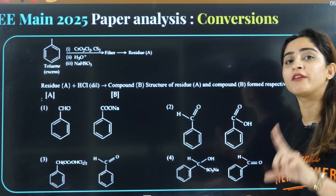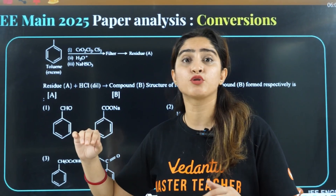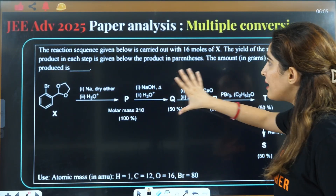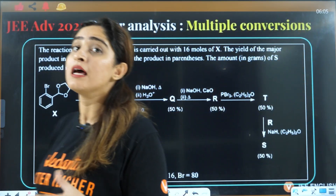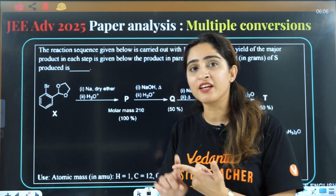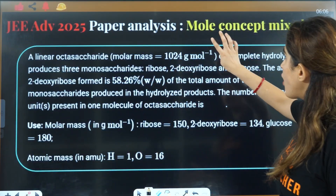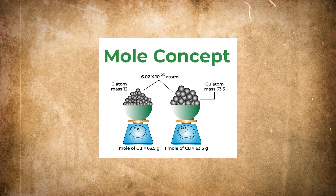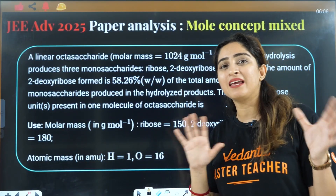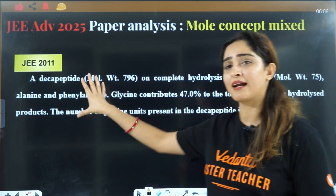The second kind of question is match-the-following reagent-based questions, so all reagents and their work should be on your tips. The third kind is conversion-based questions like A to B, B to C — find what A and B are, or their properties. Even in JEE Advanced 2025, multiple sets of conversions were asked. If you have reagents on your tips, conversions automatically follow. Then there are mole concept mixed questions where physical and organic chemistry are combined — they look scary but are actually simple because only easy parts of mole concept are applied.